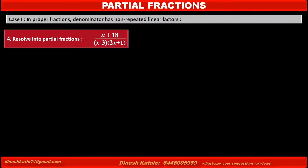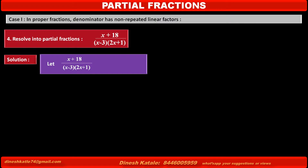Problem 4: Resolve into partial fractions (x + 18) / ((x - 3)(2x + 1)). Solution: Let the given fraction (x + 18) / ((x - 3)(2x + 1)). The denominator has two factors: (x - 3) and (2x + 1). Taking separate numerators A and B for these two factors, the given fraction becomes A/(x - 3) + B/(2x + 1).